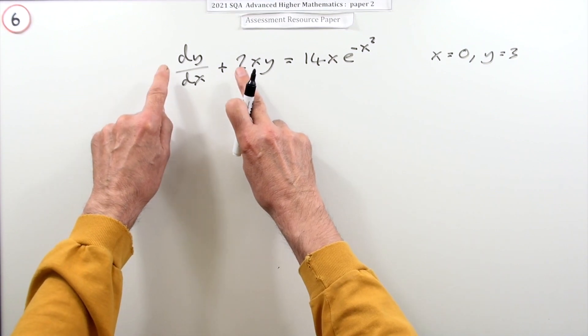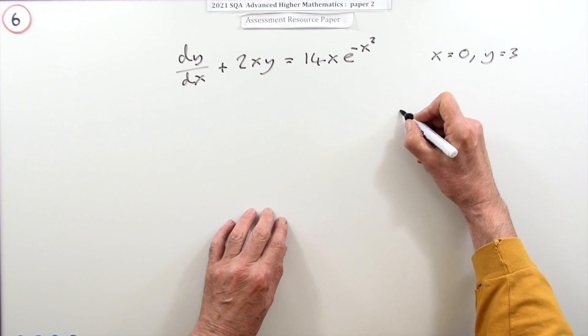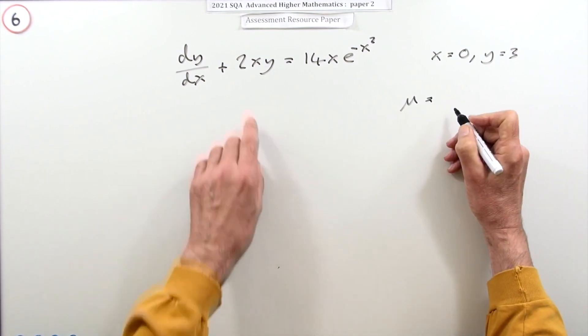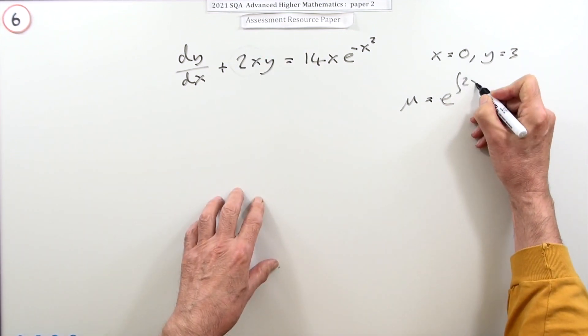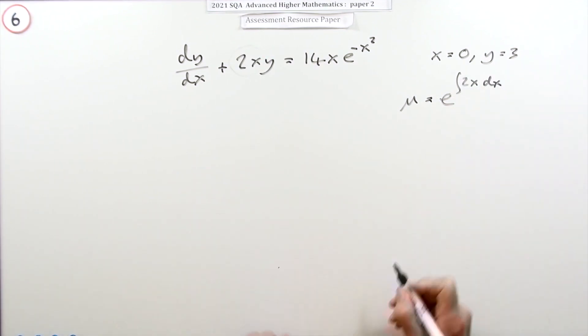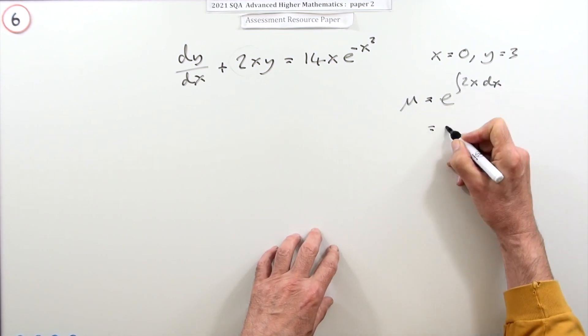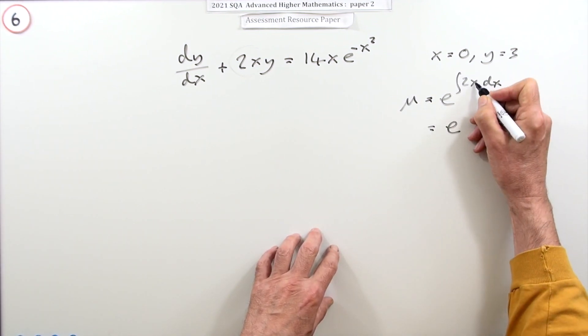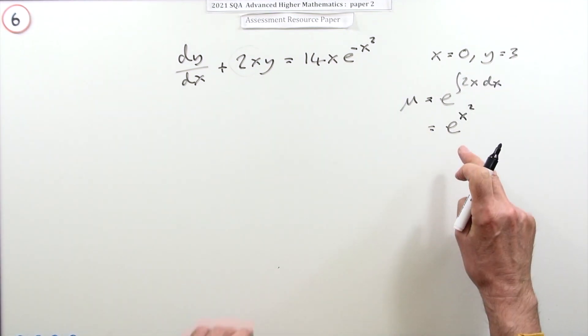That integrating factor is e to the integral of whatever appears here, so it's e to the integral of 2x dx. Now that's just going to be e to the x squared. Getting that integrating factor is worth the mark.